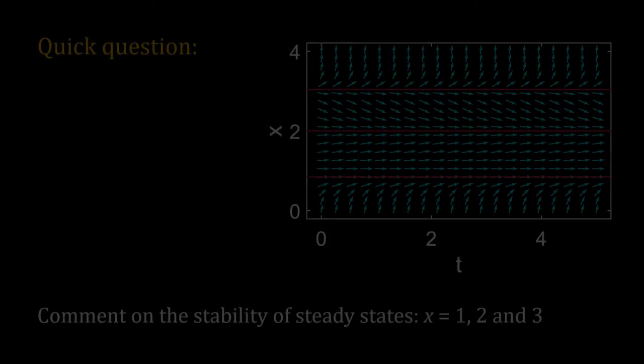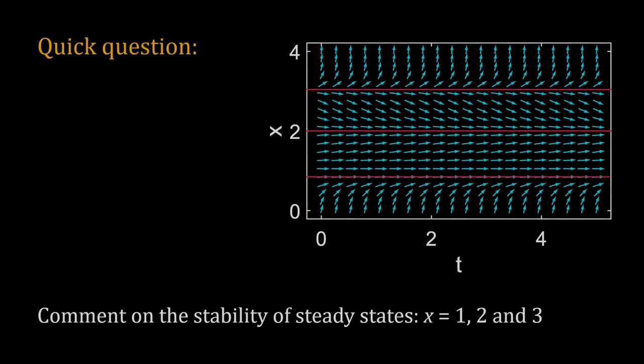Here is a question for you. I have drawn a direction field — this has three steady states. Check the arrows and identify the stabilities of these three steady states.